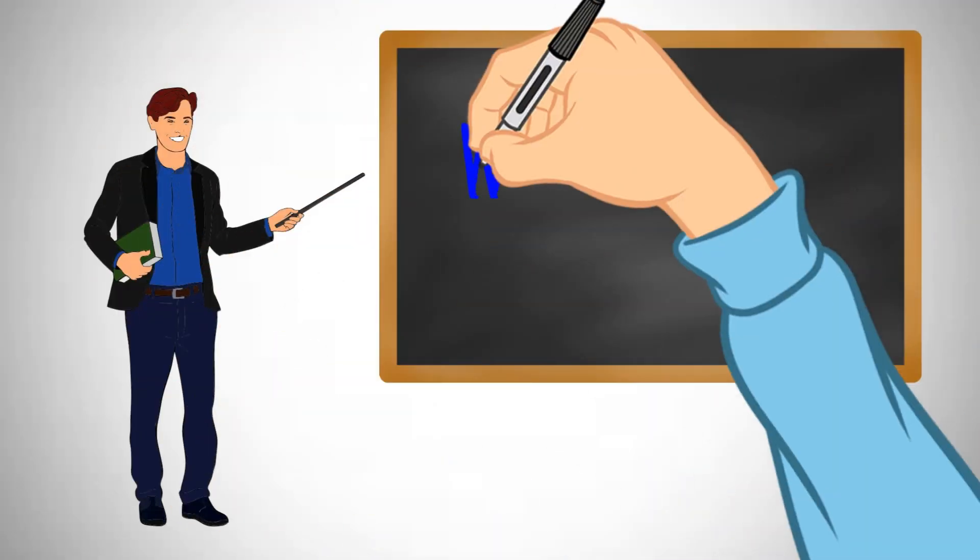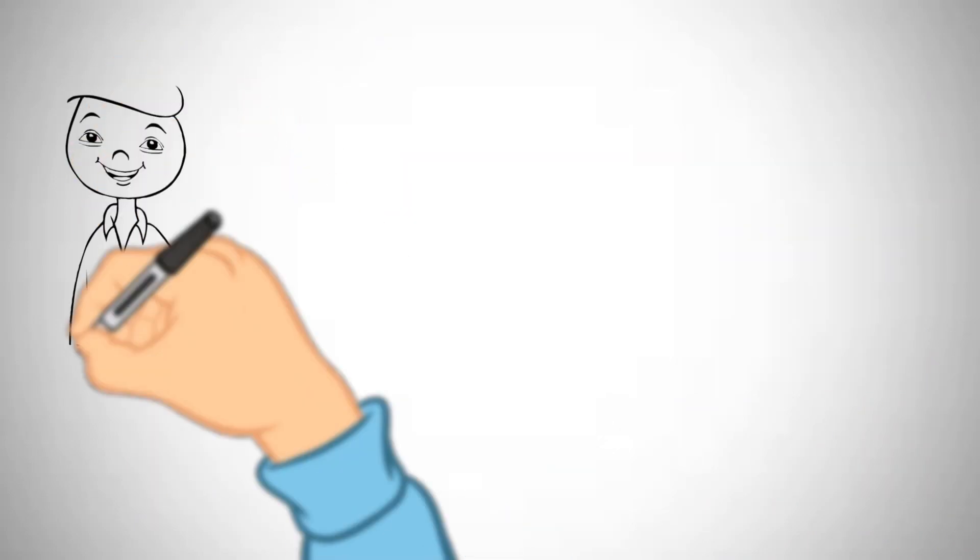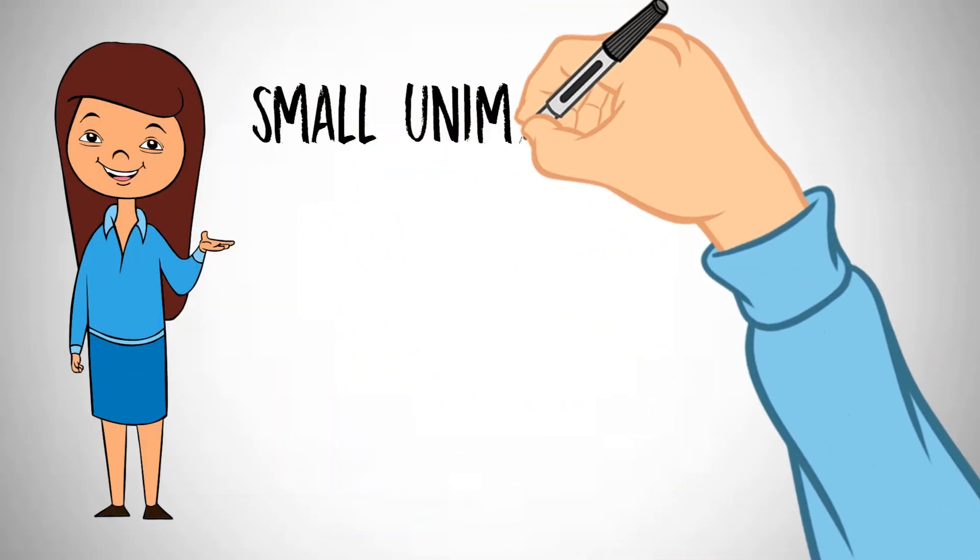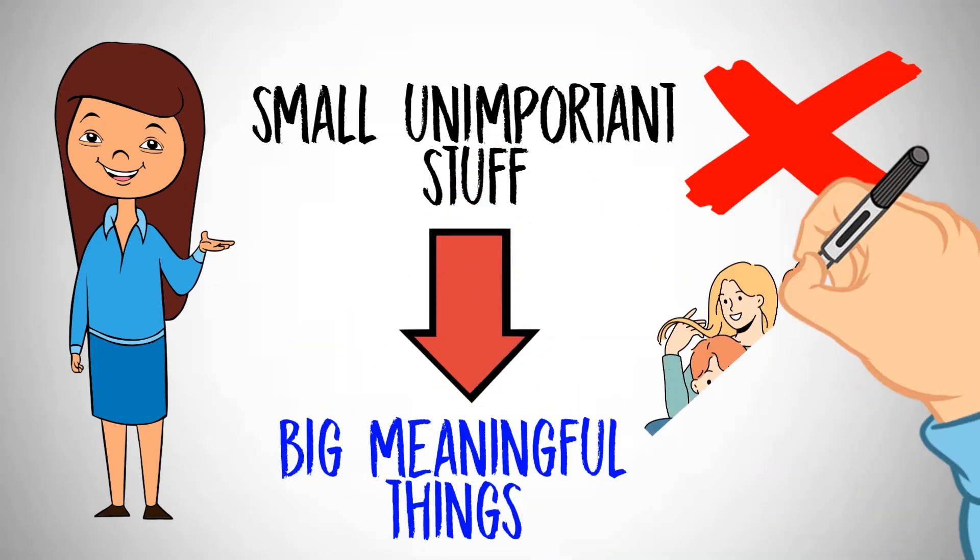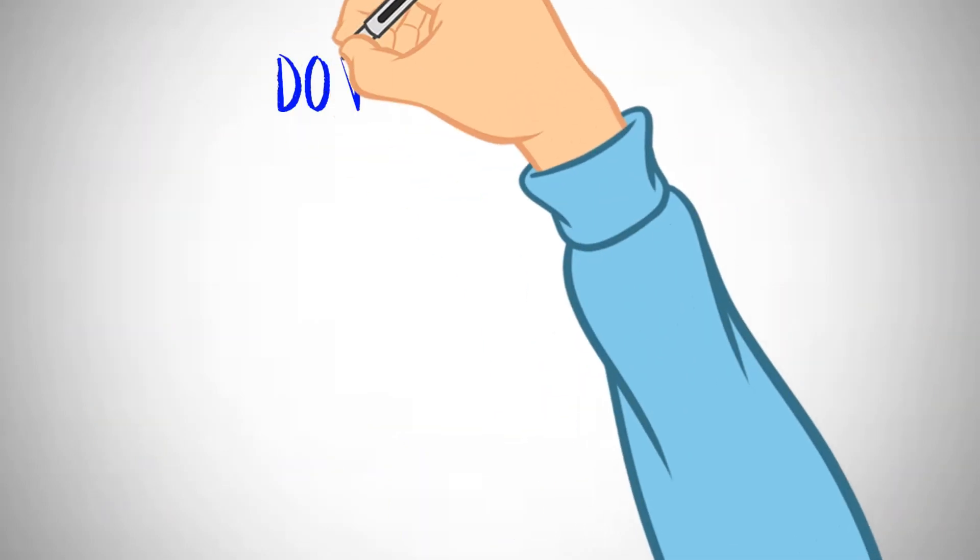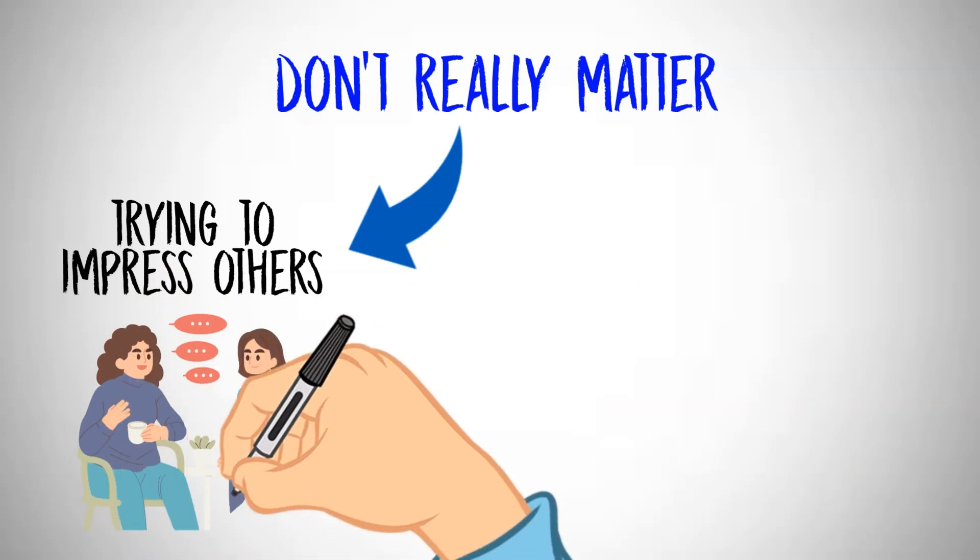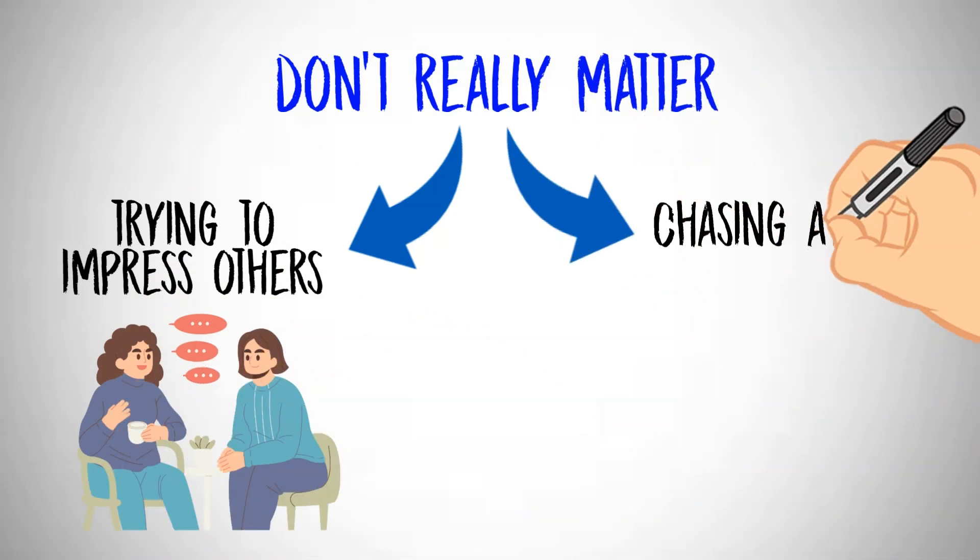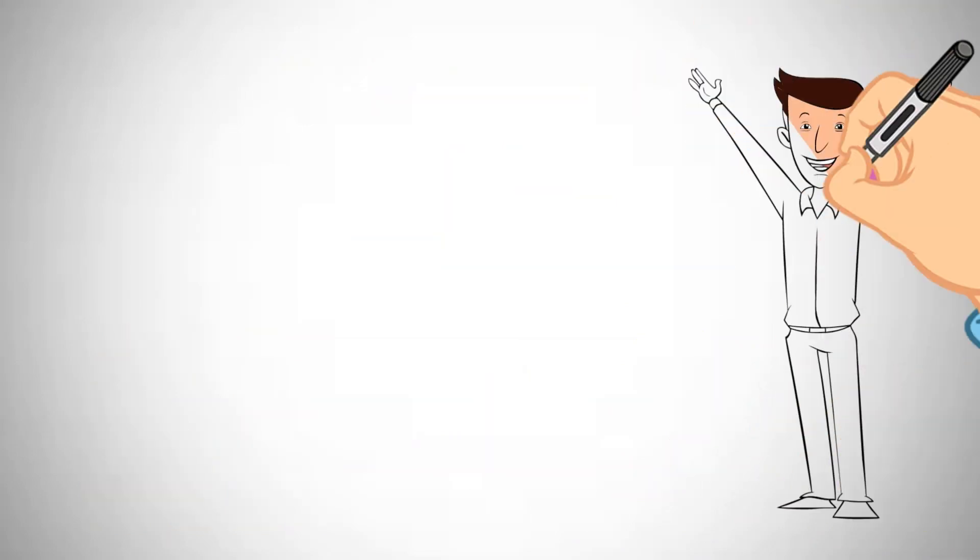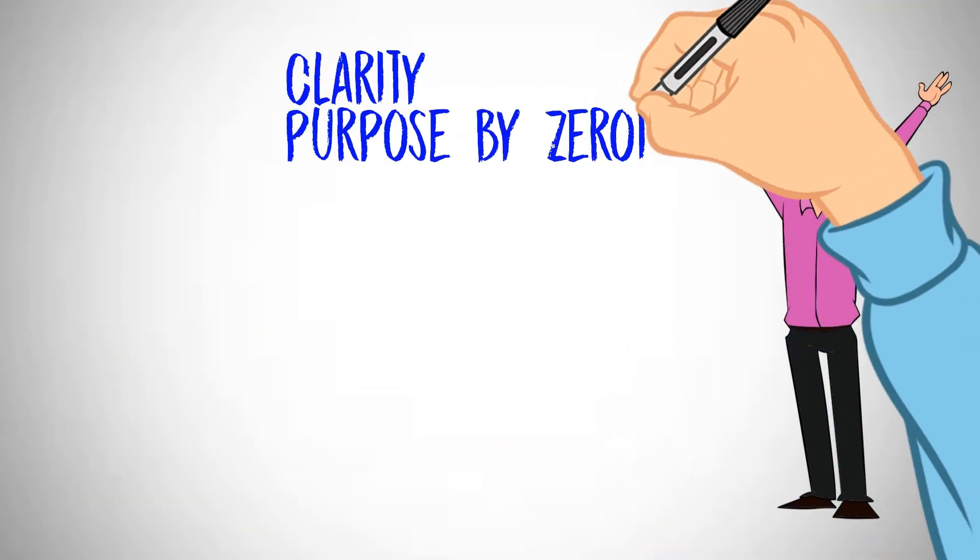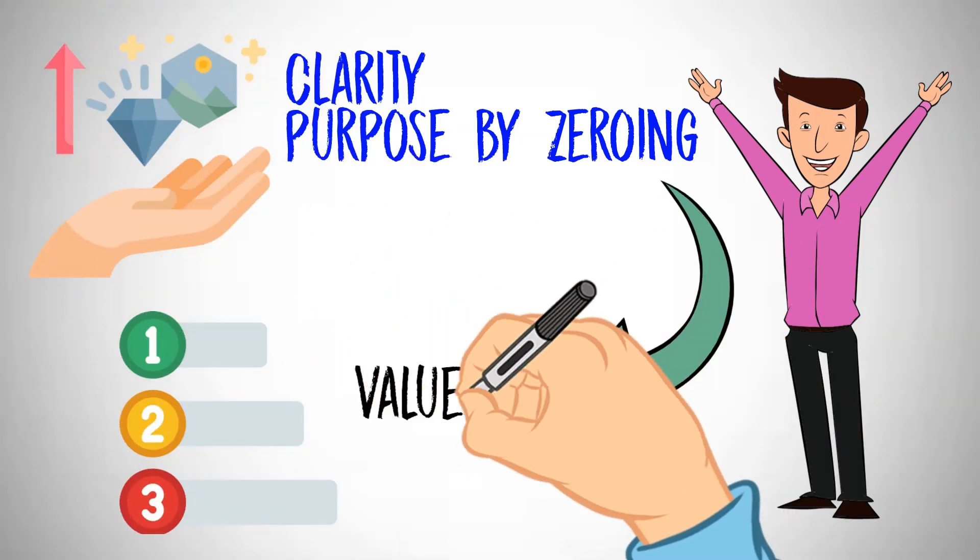Let's talk about what really matters in life, according to Mark Manson. He's all about letting go of the small, unimportant stuff and focusing on the big, meaningful things that bring you true happiness. Manson thinks we're often distracted by things that don't really matter, like trying to impress others or chasing after things that society says are a big deal. But he wants you to find clarity and purpose by zeroing in on what's at your core, your values and priorities.